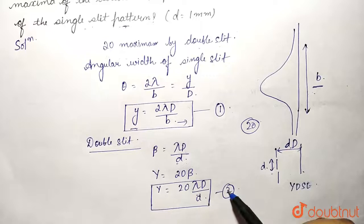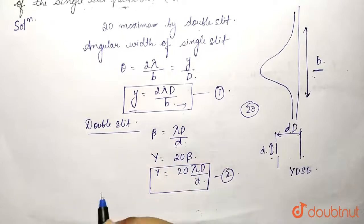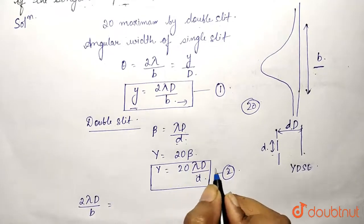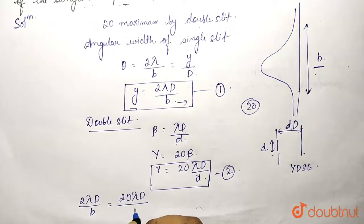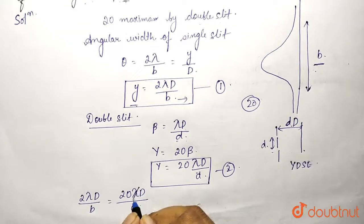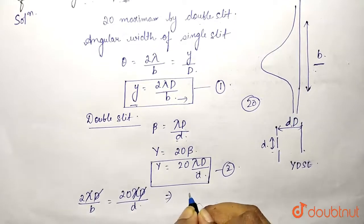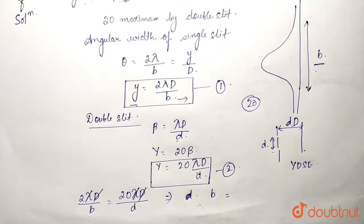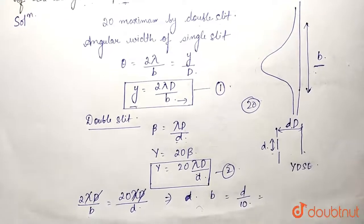For the two experiments, y is the same, so we can write: 2λD/b = 20λD/d. Here λ and D cancel on both sides, so we get 2/b = 20/d, which gives b = d/10.